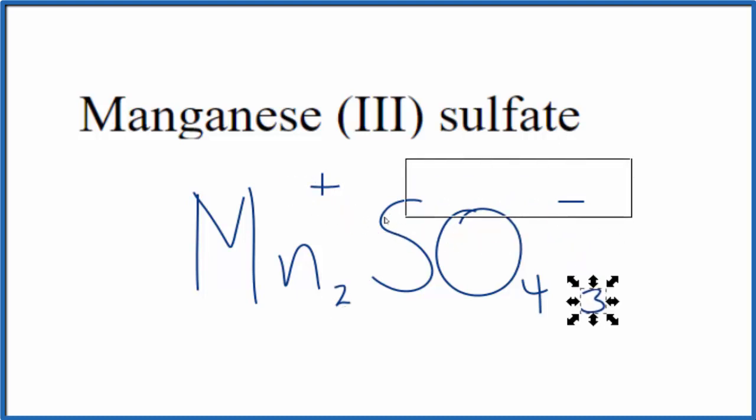Then we need to put parentheses around that sulfate ion there since we have three of them. So this is the formula for manganese (III) sulfate: Mn2(SO4)3. Let's check our work.